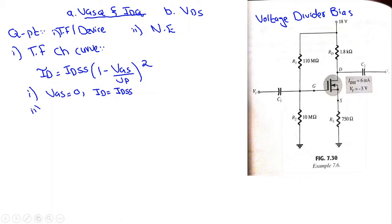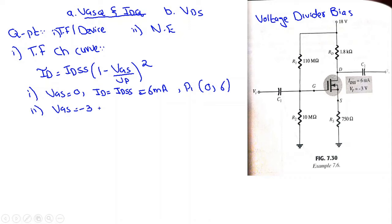IDSS is 6 mA, so the first point is: VGS = 0 on the x-axis and ID = 6 mA on the y-axis. The second point is when VGS = VP, which is −3V, giving ID = 0 mA. So the second point is (−3, 0).